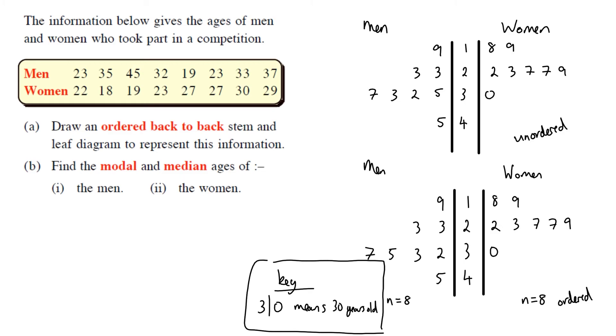And then it asks us to find the modal and median ages of the men and the women. So let's do part one. Let's do the men first. So the mode. Let's have a look. What number repeats on the men? The only one that's in order is 23 and 23. So that's our most common number. You can see you've got a five here and a five here in the leaves. But that's not the same. This one's 35. This one's 45. So it has to be right next to each other in the same row to be common. So 23 and 23 would be our mode. That's the only numbers that repeat for the men.